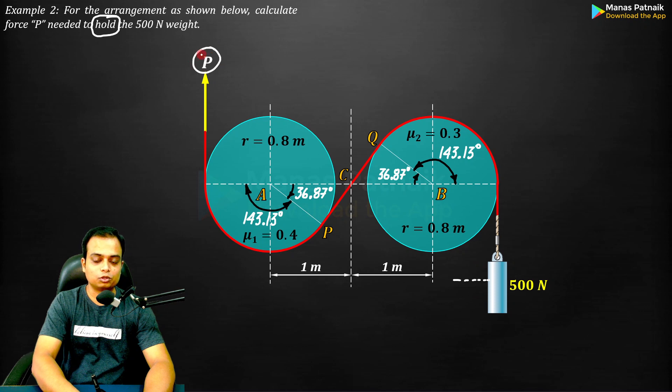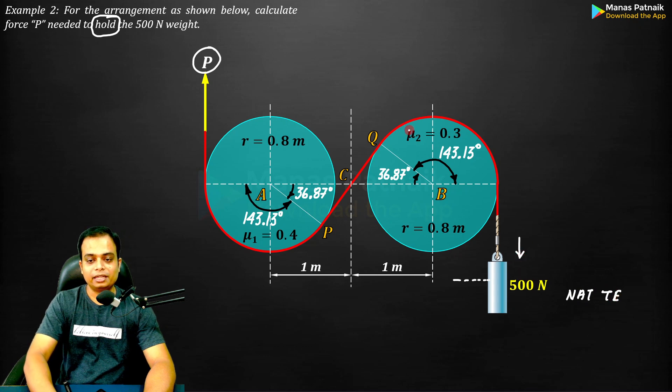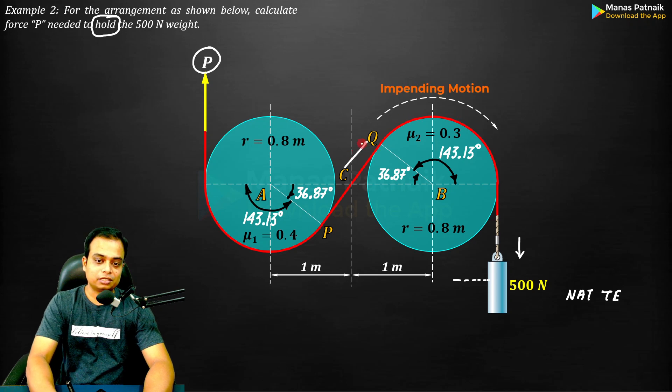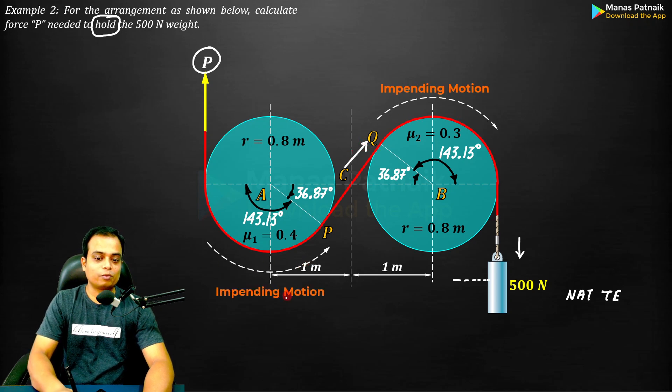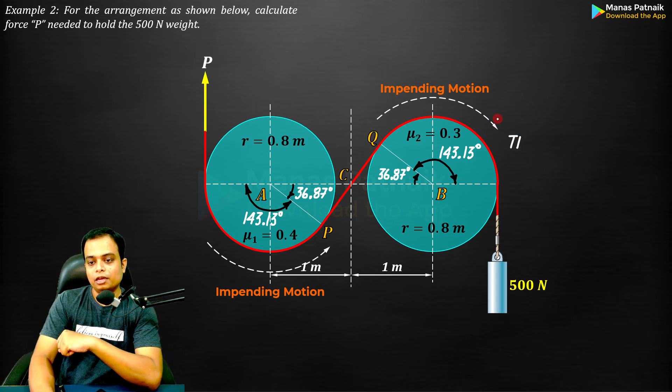The natural tendency of this 500 newton block will be in the downward direction. Then the rope will have a tendency to move in the clockwise sense this way, and over here in the anticlockwise sense.